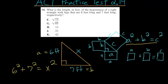And 6 squared is 6 times 6, which is 36. 7 squared, which is 7 times 7, is 49. This is equal to x squared.